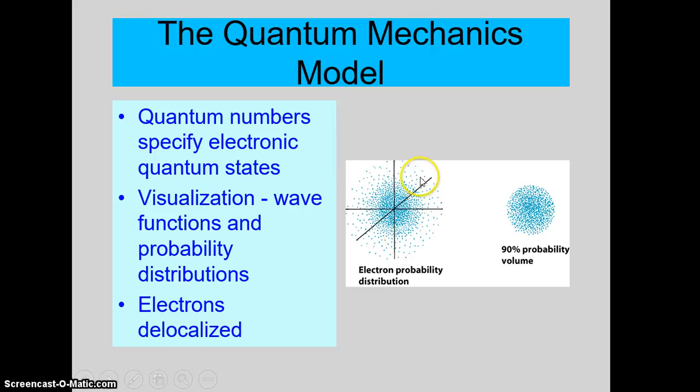It turns out that quantum mechanics does something very different than anything in mechanics or electricity and magnetism. What it does is it gives us what's called a wave function, which gives us the probability of finding the electron in certain locations around the nucleus. So we don't think of the electron as being in orbit anymore. Sometimes these are called orbitals.